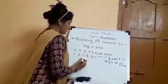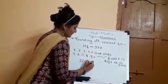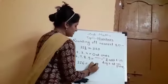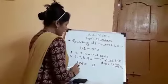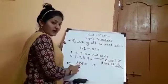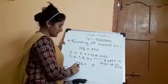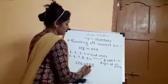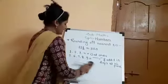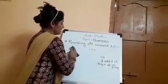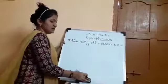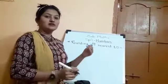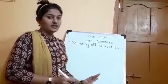If you have 326, what would you do? 6 will become 0 because we are rounding off to the nearest 10. Since 6 is greater than 5, you add 1 to the digit at the 10's place: 2 plus 1 is 3, and 3 remains as it is, so the value is 330. In summary, if the digit at the 1's place is less than 5, put 0 there and the 10's and 100's place digits remain unchanged.